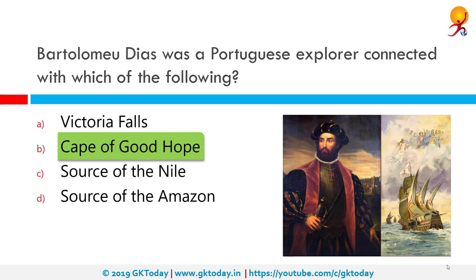Bartolomeu Dias was a Portuguese explorer connected with which of the following? The correct answer is the Cape of Good Hope. Bartolomeu Dias, a nobleman of the Portuguese royal household, sailed around the southernmost tip of Africa in 1488 — the first to do so — setting up the route from Europe to Asia. He was the first European during the Age of Discovery to anchor at what is present-day South Africa.